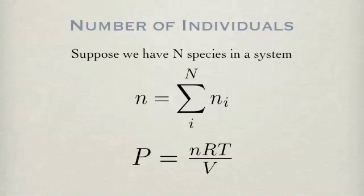A common way to keep track of how much we have of a species is to simply count them. Since we are talking about a lot of molecules, we use moles, as in the ideal gas law. The total number of moles of a system is simply the sum of the individual components. Using the ideal gas law, we can relate this number to a pressure.